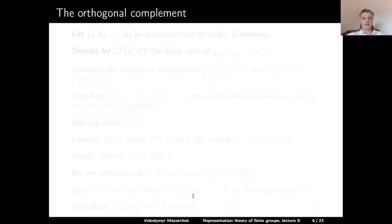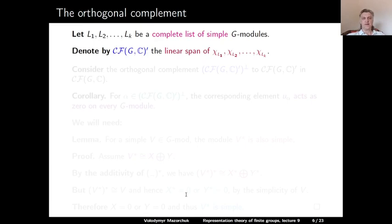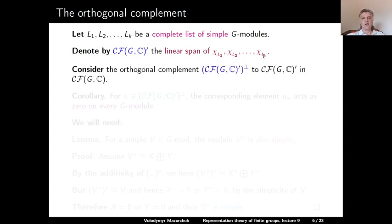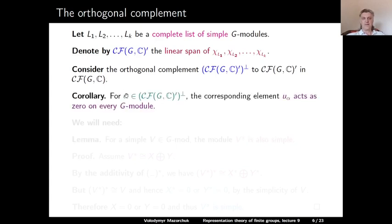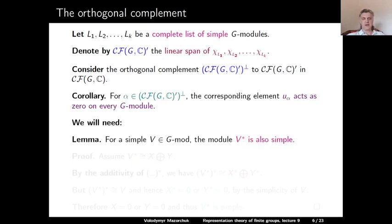Now let us look at the orthogonal complement to the linear subspace generated by simple characters. As in the formulation of the main theorem, let L1, L2, ..., Lk be a complete list of simple G-modules. Denote by Cf' the linear span of the characters of these simple modules — this is a subspace of the space of class functions — and consider its orthogonal complement. Claim: if alpha is a class function orthogonal to the characters of all simple modules, then the corresponding element U_alpha acts as 0 on every G-module. To prove this, we need the following lemma: for any simple module V, the dual module V-dual is also simple.